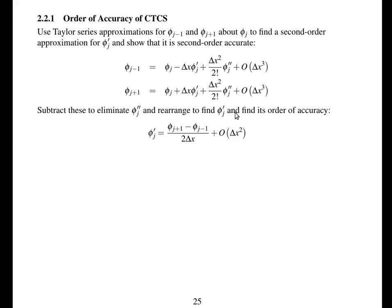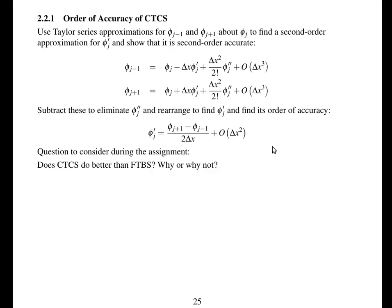This is what we wrote down for d phi by dx on the previous slide. So we've proved that this is second-order, centred in time as well as centred in space — second-order in both time and space. A question to consider in the assignment: does CTCS do better than forward in time, backward in space? Why or why not?